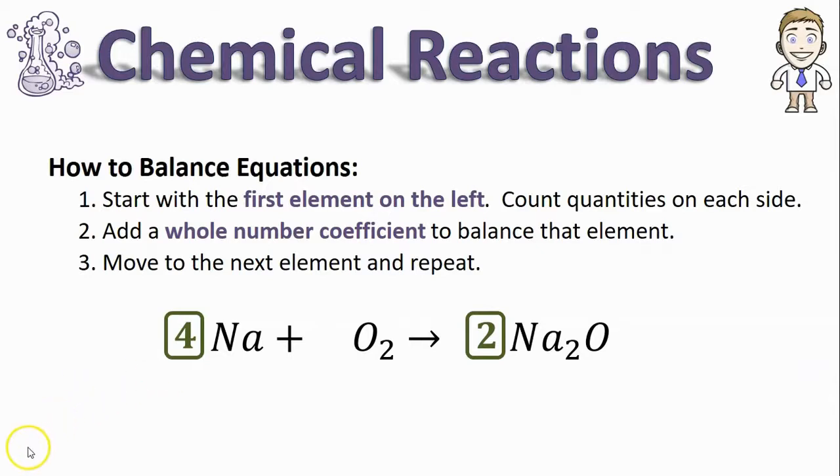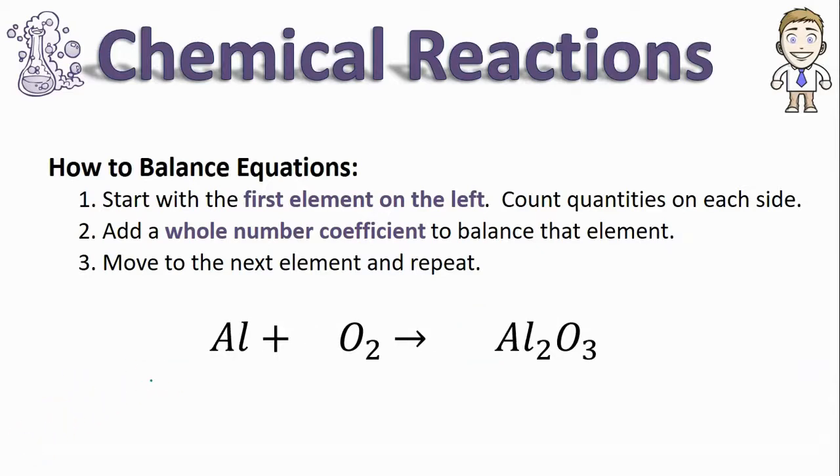Let's see that again with a different equation. Here my first element is aluminum and there's only one. Finding aluminum on the products, I see that there's two. To make those numbers balanced, I'll put a coefficient of two, so now there's two aluminums on each side.